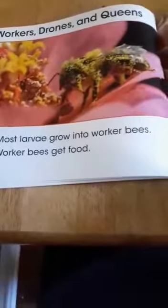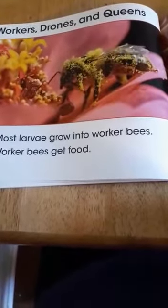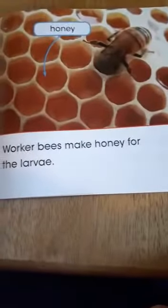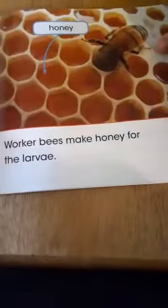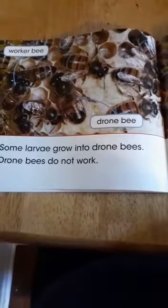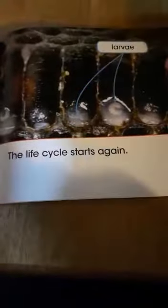Most larva grow into worker bees. Worker bees get food and make honey for the larva. Some larva grow into drone bees, which do not work. Some larva grow into queen bees, and a queen bee lays eggs — the life cycle starts again.